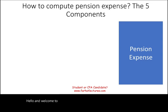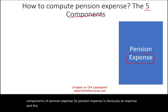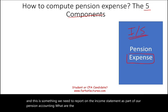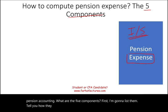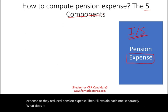Hello and welcome to the session in which we look at the five components of pension expense. Pension expense is an expense we need to report on the income statement as part of our pension accounting. I'm going to list the five components, tell you how they affect pension expense — whether they increase or reduce it — and then explain each one separately.